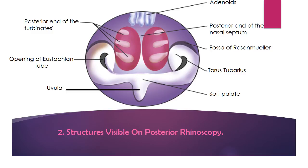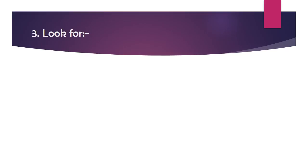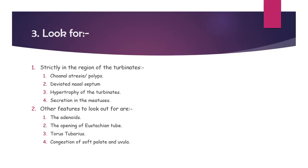Sites visible on posterior rhinoscopy: the posterior part of the nasal septum; on either side — the posterior ends of the three turbinates with their meatuses; above — the adenoids; below — the posterior part of the soft palate and uvula; laterally — the opening of the Eustachian tube, in front of which is the torus tubarius, and above that the fossa of Rosenmüller. Nasal pathologies to look for: choanal atresia, polyps, deviated nasal septum, hypertrophy of turbinates, and secretions in the meatuses. Other pathologies: adenoids, Eustachian tube opening, torus tubarius, and congestion of the soft palate and uvula.